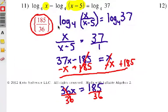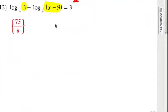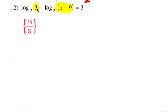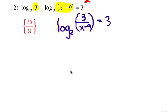Finally, number twelve. Let's see if you got that right. Log base two of three minus log base two of x minus nine. Again, we are subtracting there, so let's compress it and write it as a quotient. Log base two of three over x minus nine. There's your quotient. Equals three.